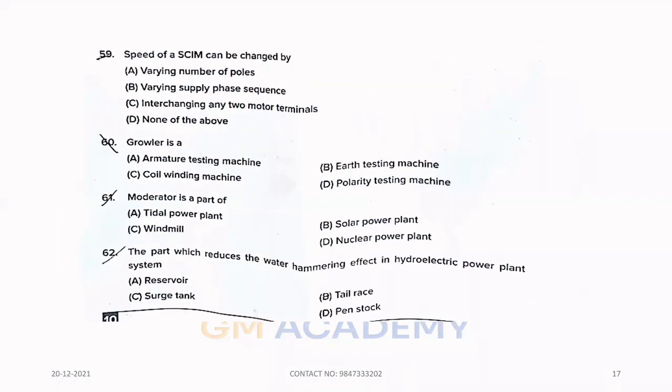Fifty-nine. Speed of squirrel cage induction motor can be changed by. Option A, varying number of poles. Sixty. Growler is an armature testing machine. Sixty-one. Moderator is a part of option D, nuclear power plant.